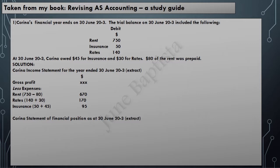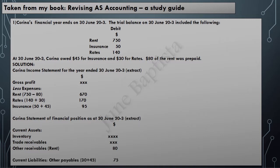Carina's statement of financial position as at 30th June 20-3, extract. We look at current assets and current liabilities. Under current assets, other receivables: in this case it is a prepayment — rent $80. Under current liabilities, other payables: the two accruals of $30 for rates and $45 for insurance, giving total other payables of $75 for the year ended 30th June 20-3.